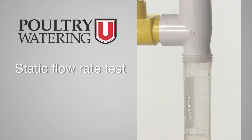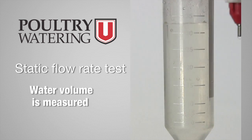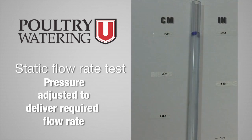The drinker trigger pin is pushed up and held up in an open position for one minute. Then the water volume discharge is measured. The producer sets column pressure at the level needed to achieve the required drinker discharge, or flow rate.